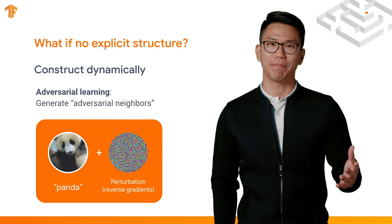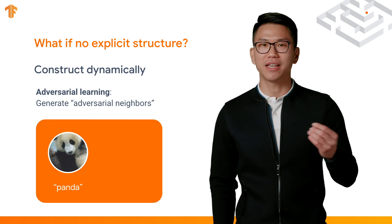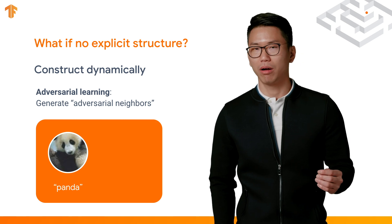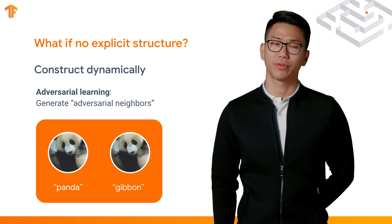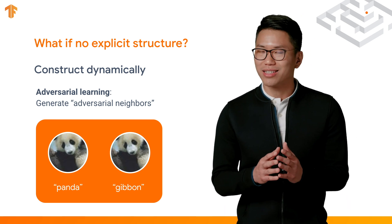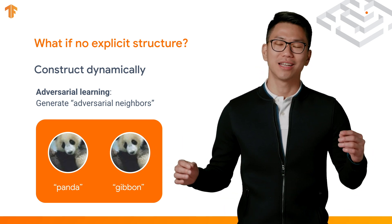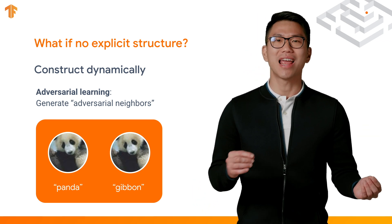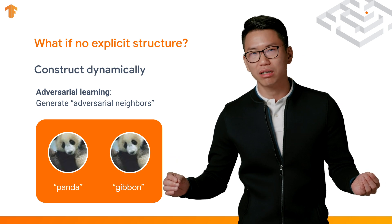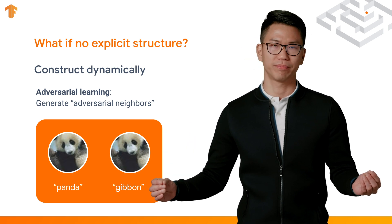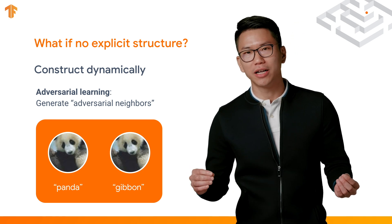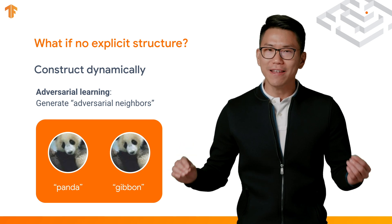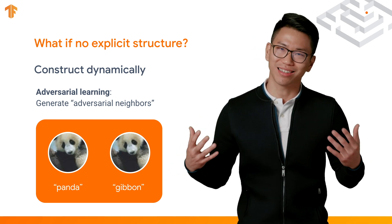Let's look at an example. Say the sample is a panda image. The constructed adversarial neighbor also looks like a panda image. Usually, human eyes cannot tell the difference between the two. However, the neural net is confused by the adversarial neighbor and classifies it incorrectly into a gibbon. This is because the small perturbation applied on the sample successfully confuses the model, even though we humans cannot detect it.